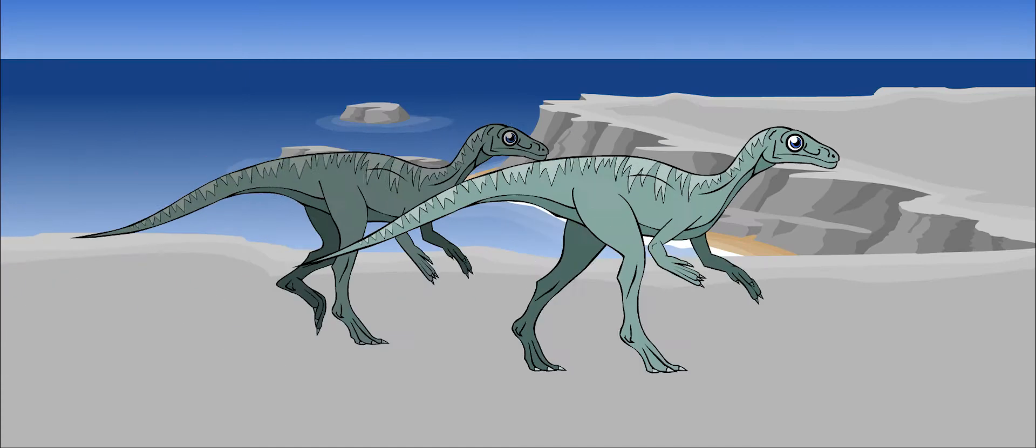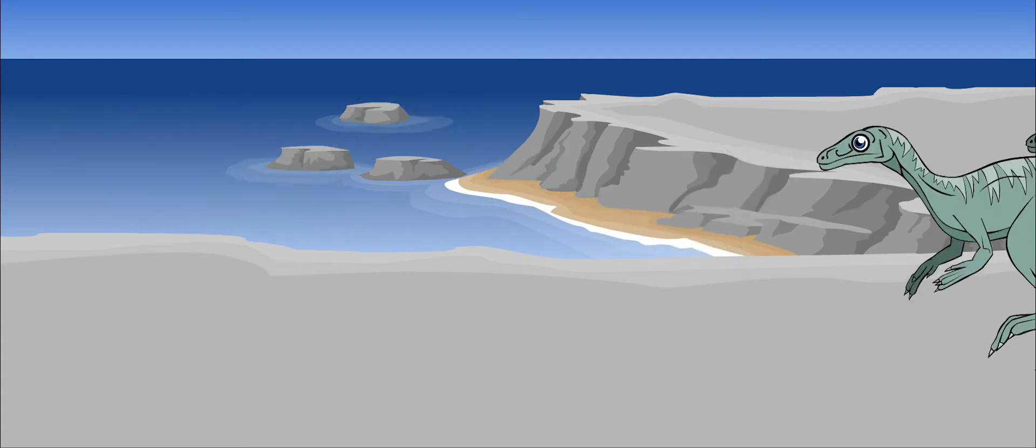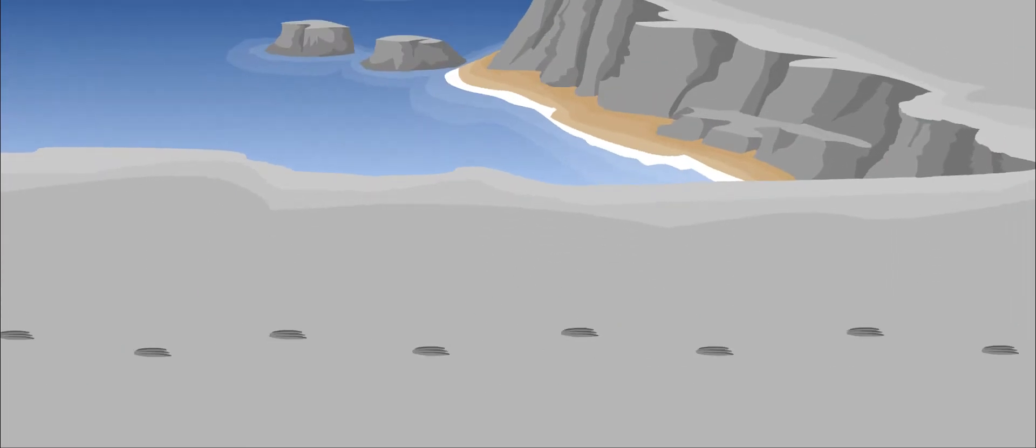Eoraptor ran on its back legs, but could also walk on all fours. Animals that move about on two legs are called bipedal. We know from its footprints that it was a fairly fast runner.